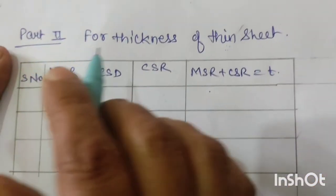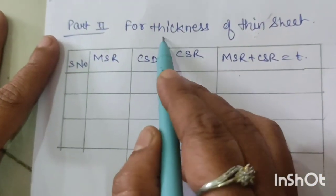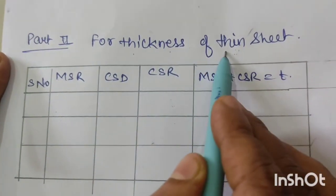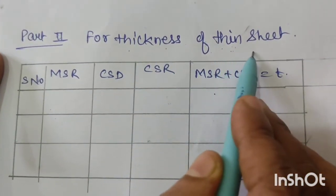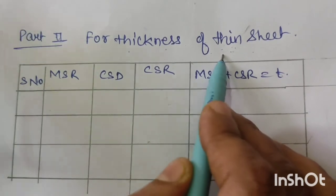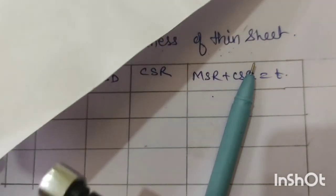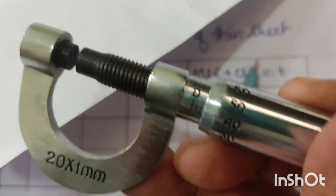The next part is to find out the thickness of a thin sheet. We take any thin sheet and find out its thickness using the screw gauge. Again, we will record MSR and CSR values.